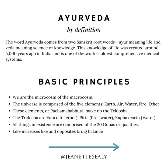It's at least 5,000 years old and falls under the basic guidelines or principles that we are the microcosm of the macrocosm, that the universe and all of matter is comprised of the five elements — air, earth, water, fire, and ether — that these elements, also known as the panchamahabhuta, make up the three doshas, or bodily humors, which are vata, pitta, and kapha.